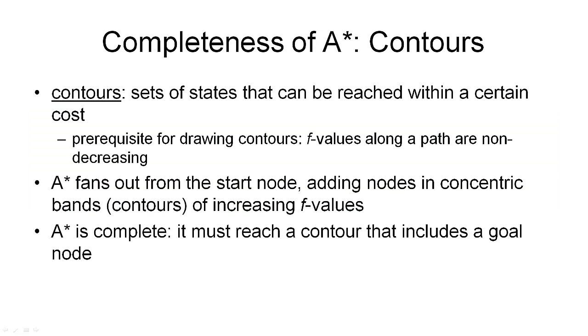Another property of A star is that it is complete, which means that if there is a solution, A star can find this solution. This can be shown using something called contours. And since this is quite an interesting concept, I want to introduce this here.